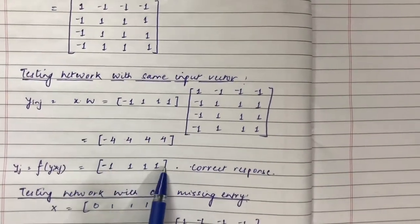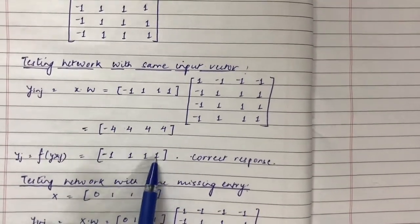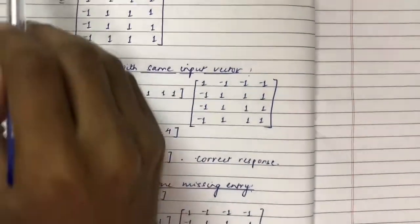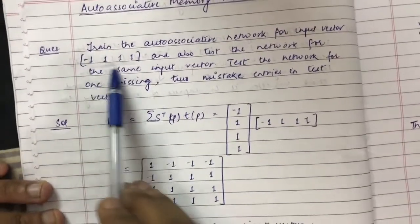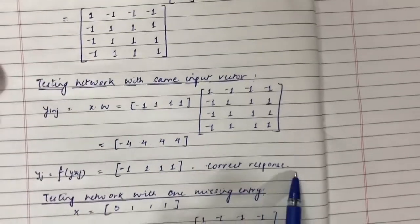you will get [-1, 1, 1, 1], which is the same as the input vector [-1, 1, 1, 1]. So this is the correct response.